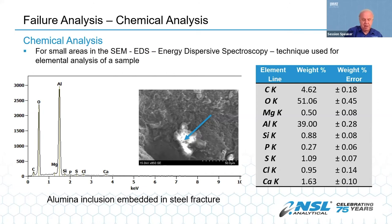EDS is energy dispersive spectroscopy. Many SEMs have this capability. It's a technique used for getting the elemental analysis from a very small area of a sample. You get a plot of counts versus energy in keV, which identifies the element. These are EDS results of an alumina inclusion embedded in a steel fracture. The percentages you get are corrected for atomic number and so on. You can do quantitative measurements if you have material standards, but like most places we use the standardless version. This is not a bulk analysis — bulk analyses like ICP or XRF get information from a much larger volume of sample. EDS gives you an idea of the chemical analysis near the surface, but it's a very small amount of material and it's not a certification.